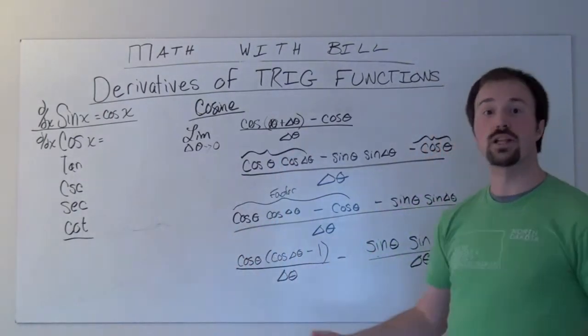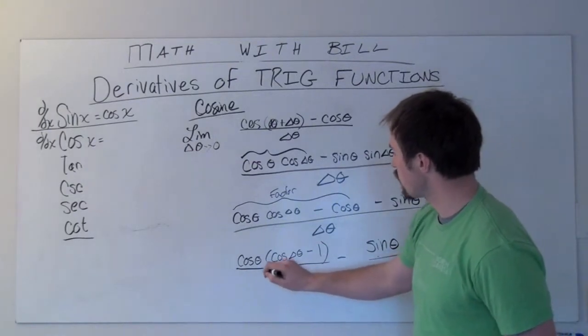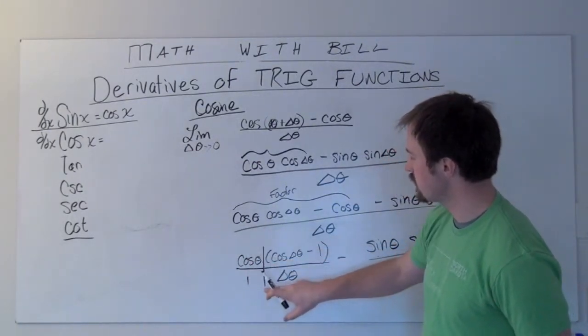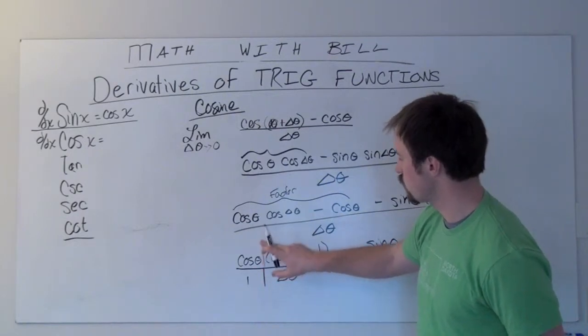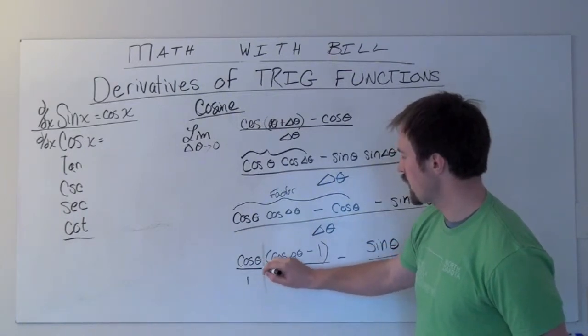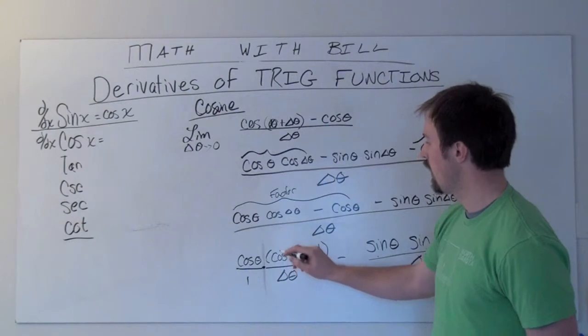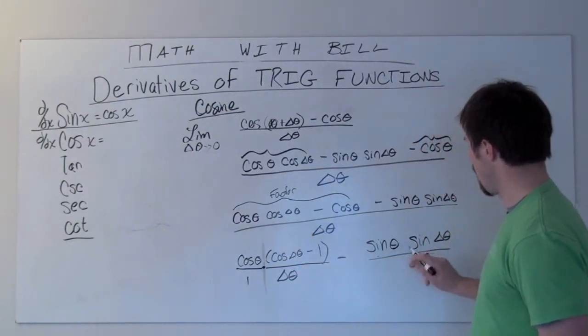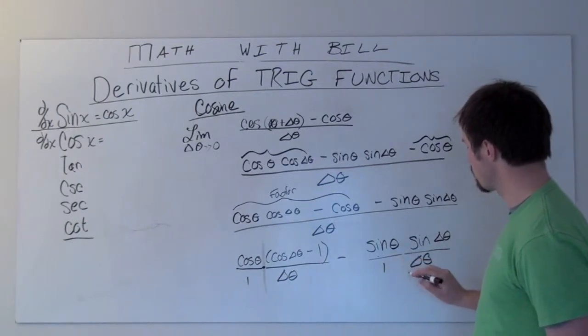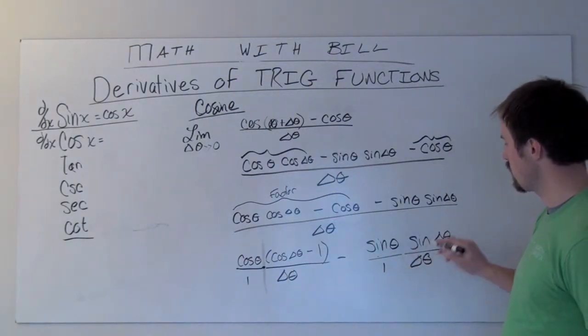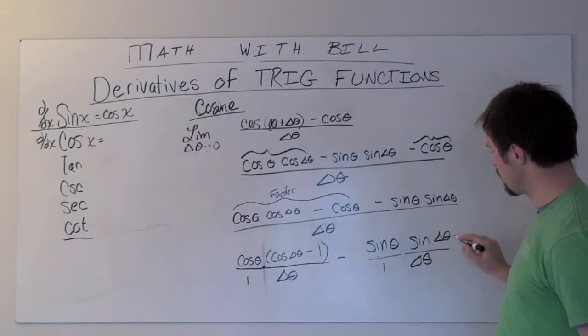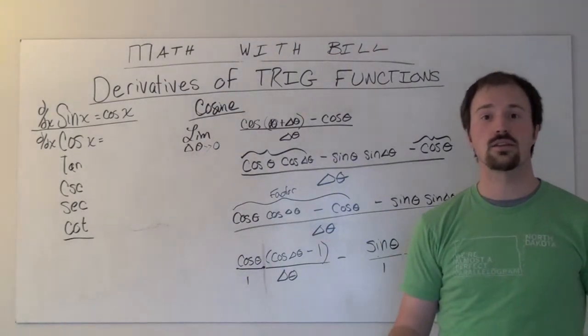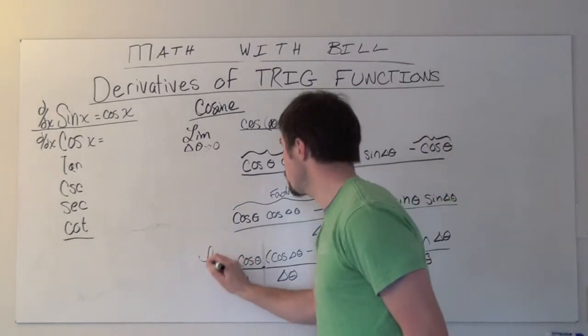If you watched the derivative of sine, you're going to notice some things that are really similar. Specifically, I can break this off because this is a multiplication, so I can create two separate fractions here. Cosine theta over one, then I have this (cosine delta theta minus one) divided by delta theta. We're going to do the same thing over here with sine, and now I've got sine theta and sine delta theta divided by delta theta. So those are the same two limits that we're going to need to evaluate here.